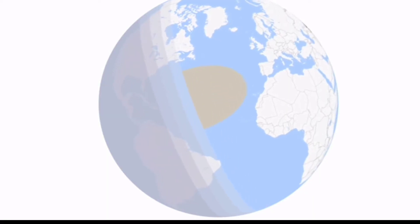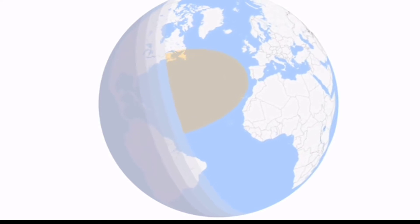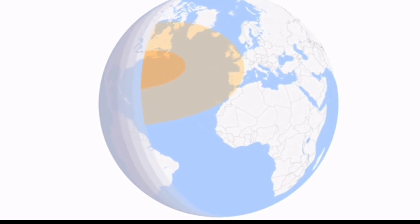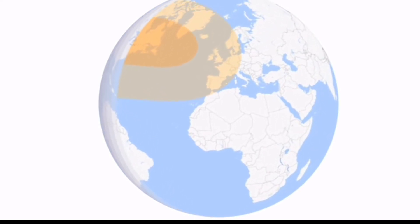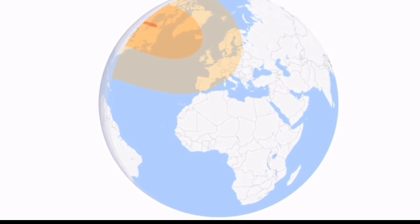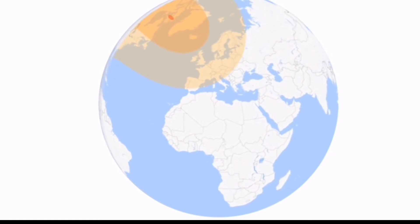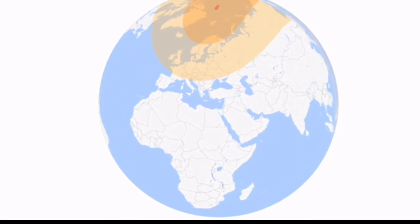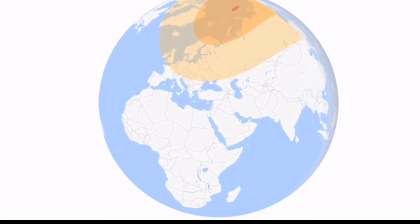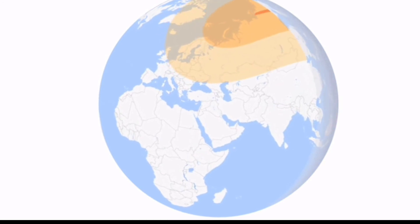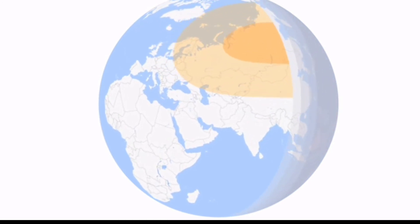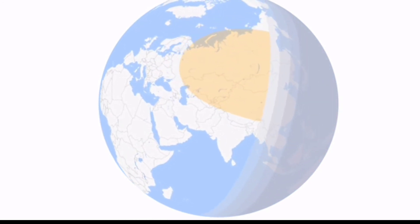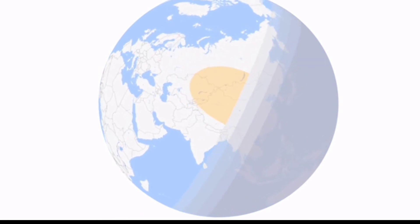This is the animation of the solar eclipse. It can be seen in Canada, Russia, and Europe, and Asia. In India, we are talking about the solar eclipse and the partial solar eclipse.